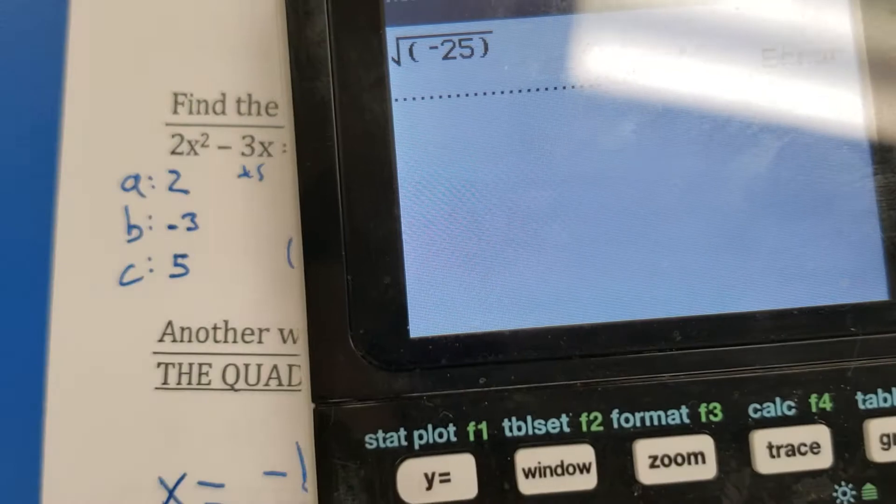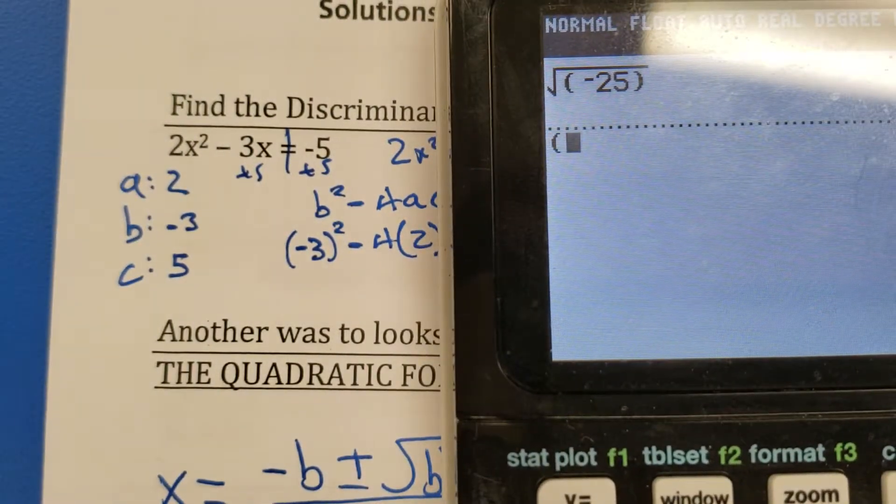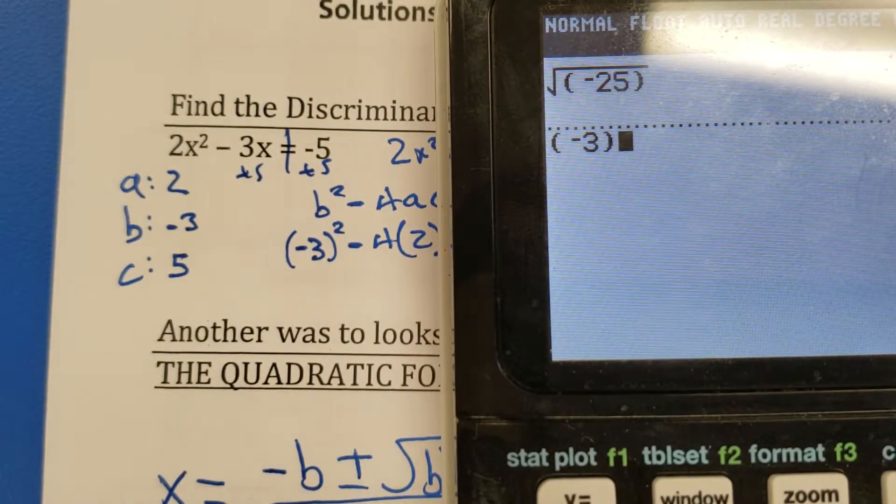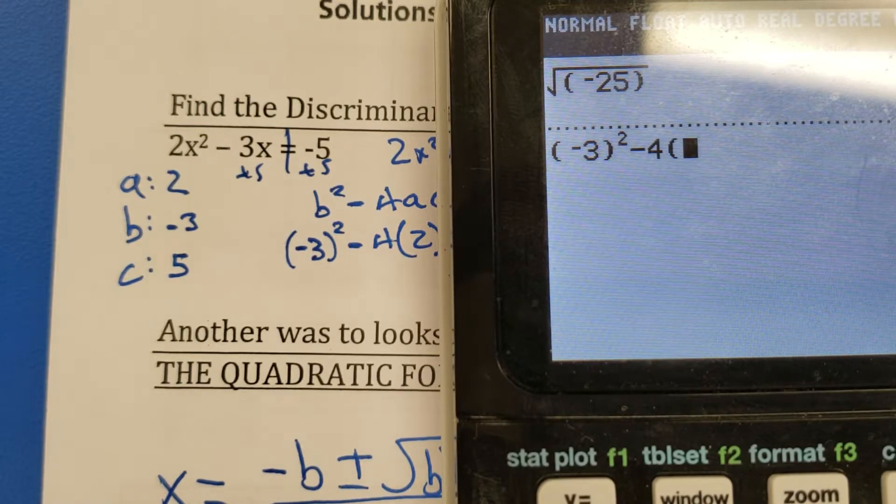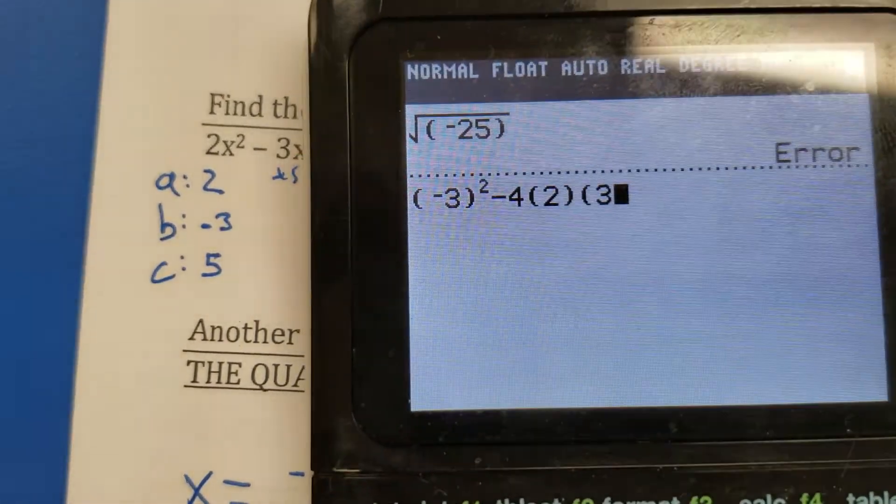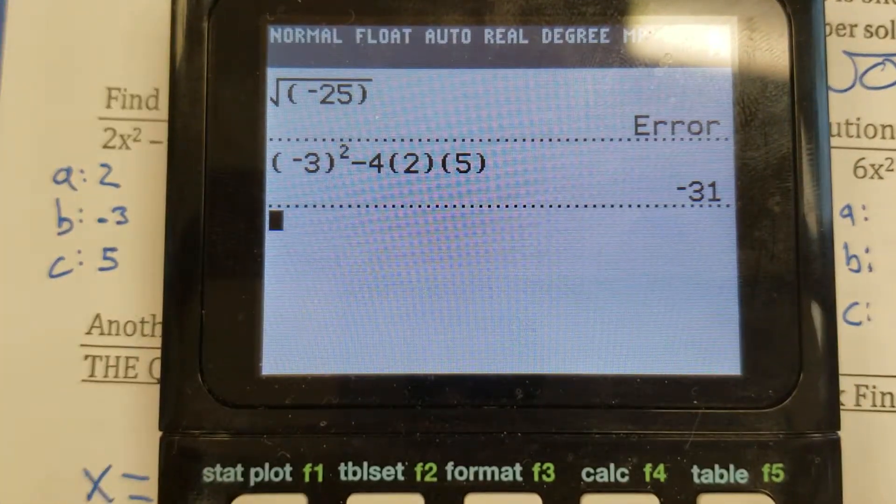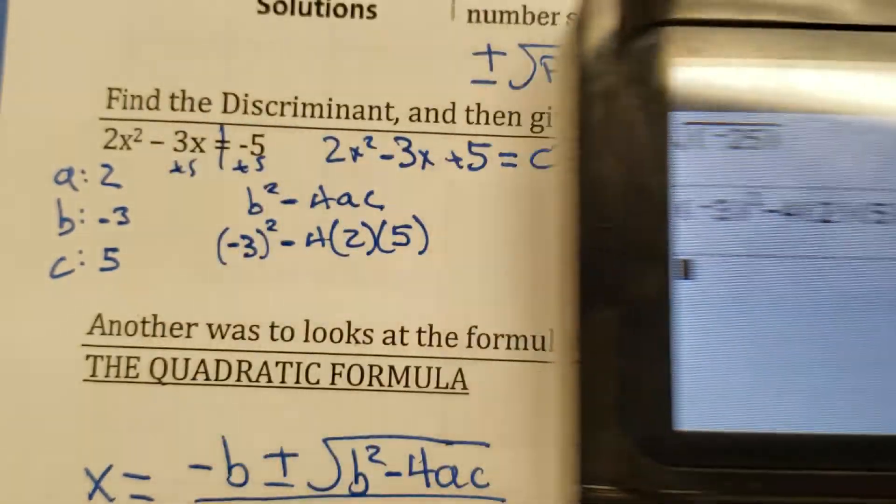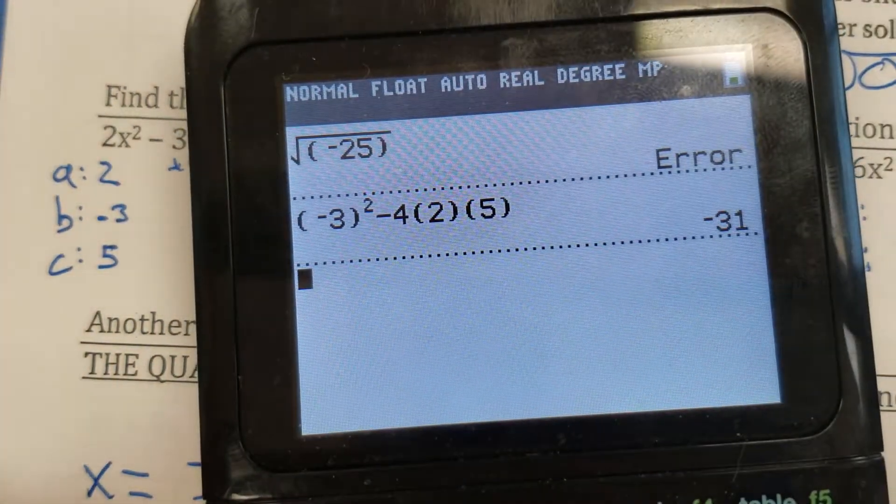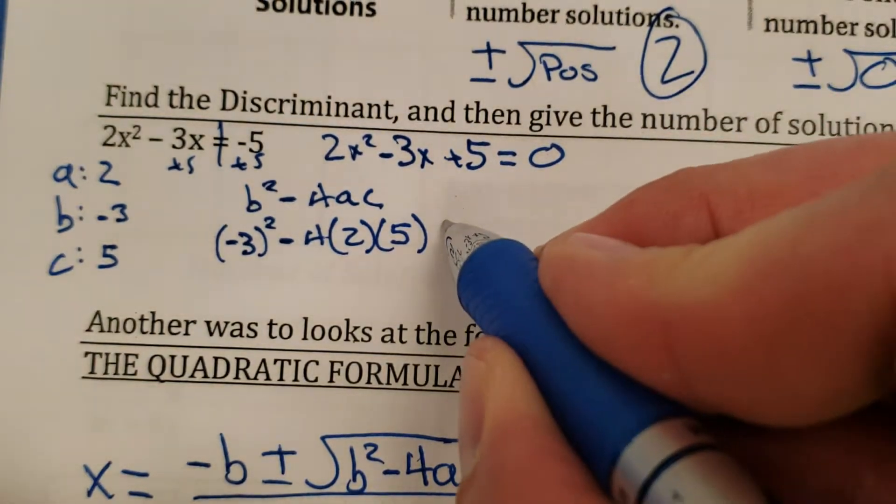Let me do something actually right here. Bracket negative 3, close the bracket, square it, minus 4, bracket 2, close the bracket, new bracket 3, excuse me, 5, what am I talking about? There we go. My discriminant is negative 31. Hmm. Negative 3 minus 4, oh, so negative 31.